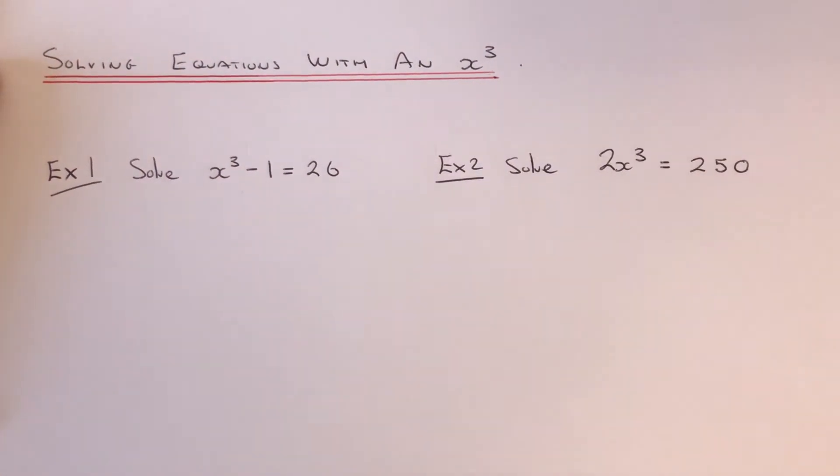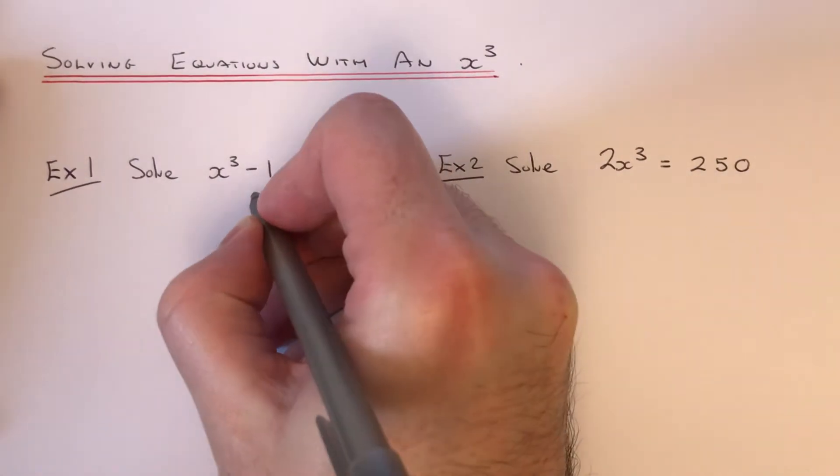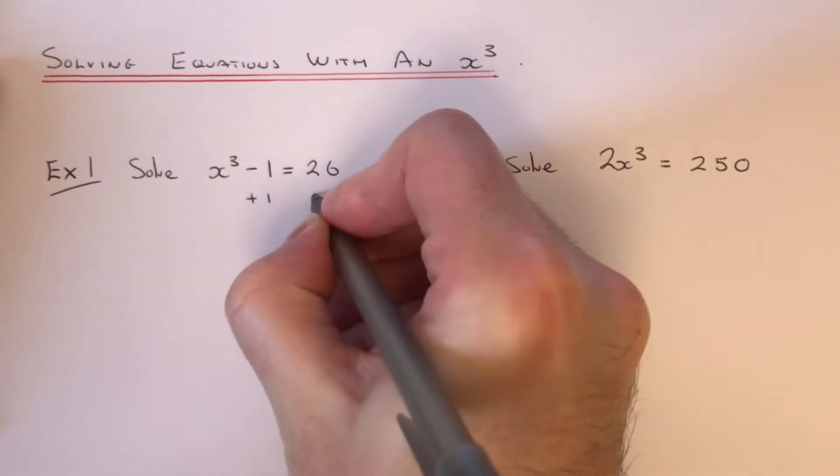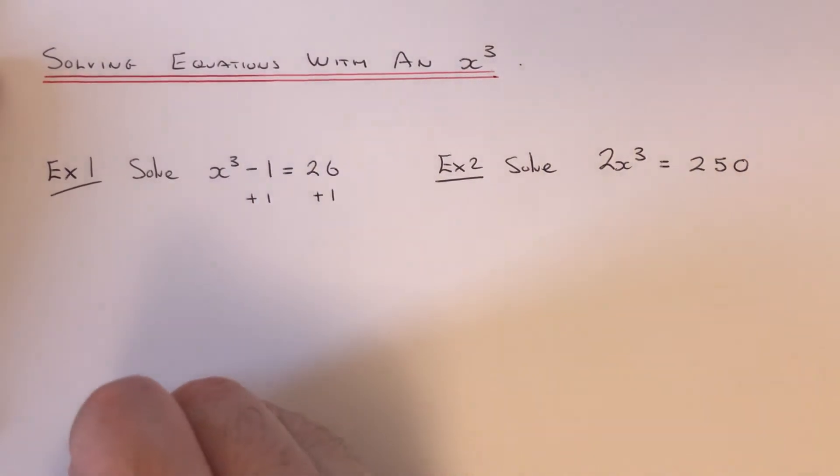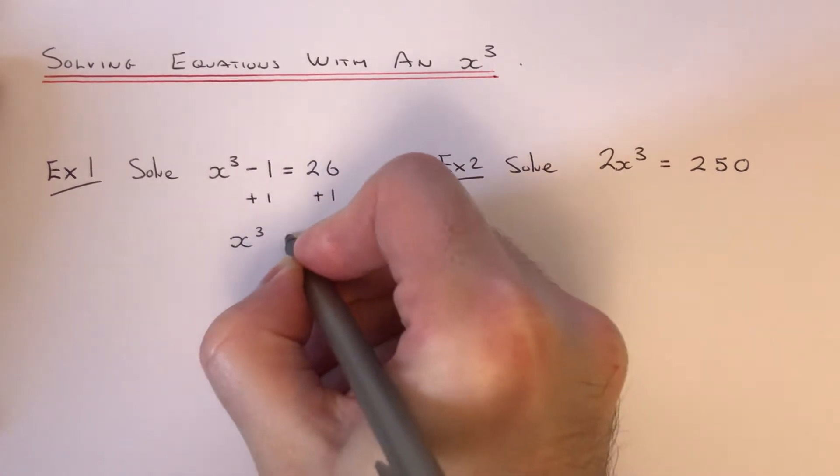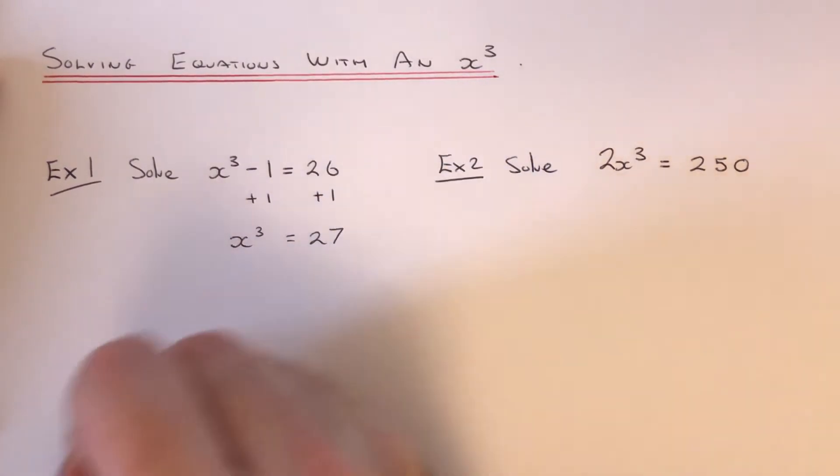So we've got to solve x cubed minus 1 equals 26. So to do this one, first of all, I need to get rid of the minus 1 by doing the opposite, which is plus 1. So this will give me x cubed equals 27.